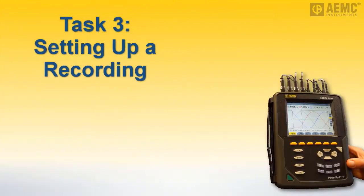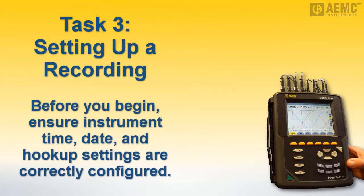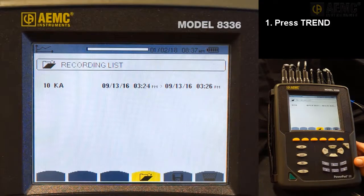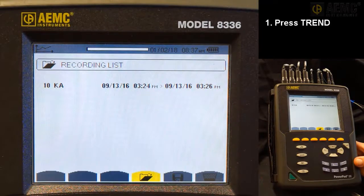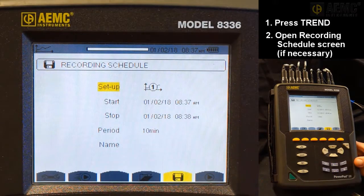Before setting up a recording session on the Model 8336, ensure the instrument time and date are correct. Also ensure the appropriate hookup setting is selected. These topics are covered earlier in this video. Press the Trend Mode button. If there are no recordings stored in the instrument, the Recording Scheduled screen appears. If there are stored recordings, as is the case here, the Recording List screen is displayed. In this situation, press the yellow function button under the disk icon to display the Recording Scheduled screen.